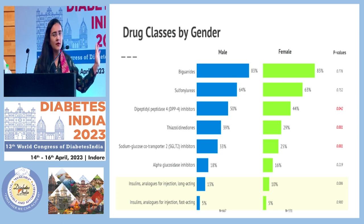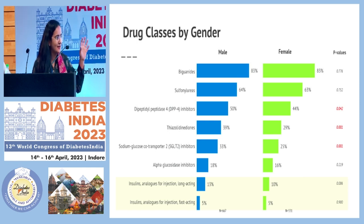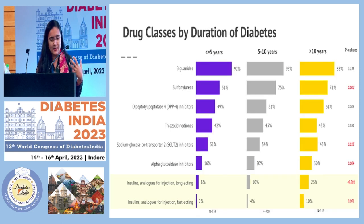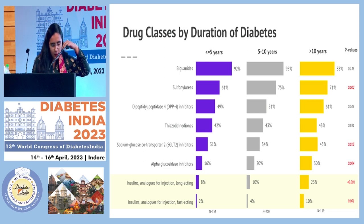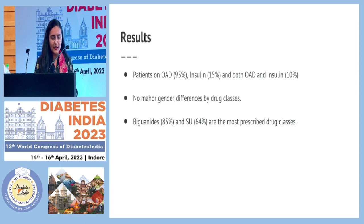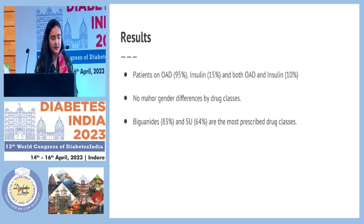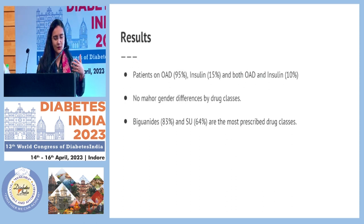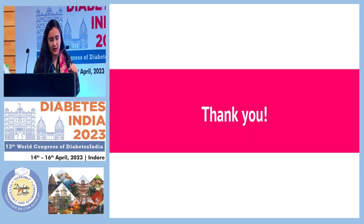When divided by male and female, there is almost no gender difference in the molecules we prescribe. In terms of duration of diabetes, for patients with longer duration the use of SGLT-2 inhibitors increased over time. In summary, 90% of patients were on OADs, 10% on a combination including insulin, there were no major gender differences, and metformin along with sulfonylureas are still dominating the prescription landscape.